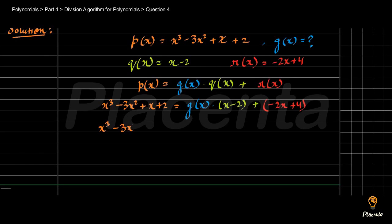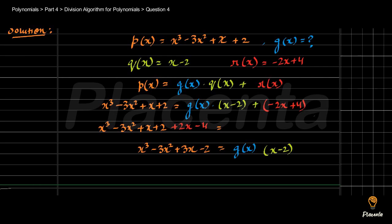After shifting the remainder to the left side, we get: x cube minus 3x square plus x plus 2 plus 2x minus 4. Solving this gives us x cube minus 3x square plus 3x minus 2, which equals g(x) multiplied by (x minus 2).